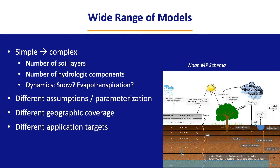There is a very wide range of land surface models that can provide soil moisture data, ranging from very simple to very complex based on a number of factors. One important one is the number of soil layers — the NOAA MP schema, for example, has four soil layers. There's also the question of the number of hydrologic components included, such as whether snow is considered and how many layers, whether evapotranspiration is considered, and how vegetation engagement with water is factored in. Even when those are consistent, there are many different assumptions about how to handle those dynamics and what kind of parameterization to use.